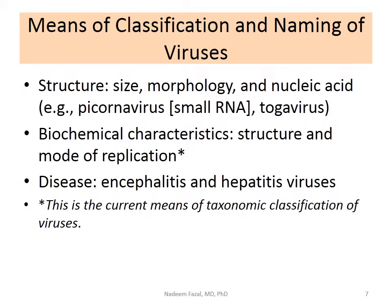As far as classification and naming of viruses, there are different classifications. Some divide them according to size, morphology, or nucleic acid type — RNA or DNA, which we will use in this course. Pay attention to the naming conventions: picornavirus — pico means small, RNA is already there. Togavirus — toga is a Greek term for outer covering like a cloak, so the virus wears it outside. There are also classifications based on biochemical characteristics, structure, and mode of replication, which is the current basis for taxonomic classification.